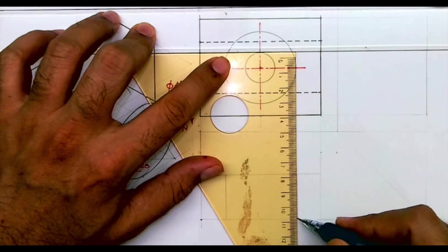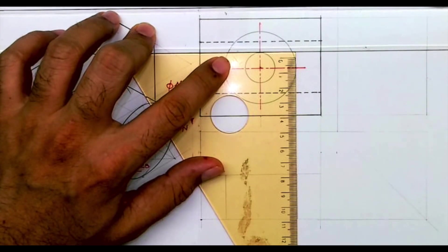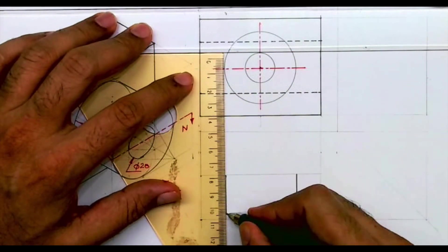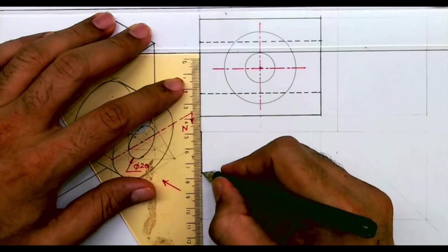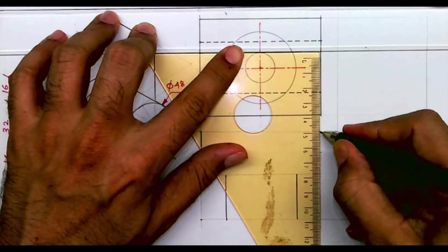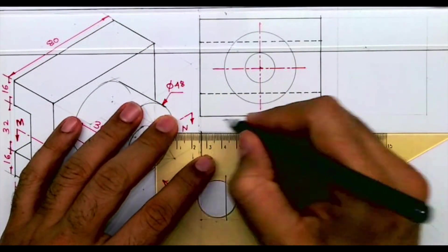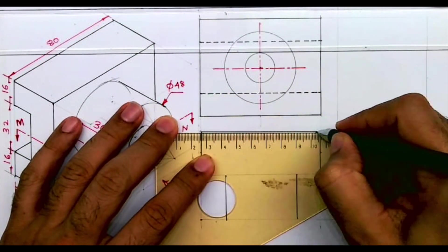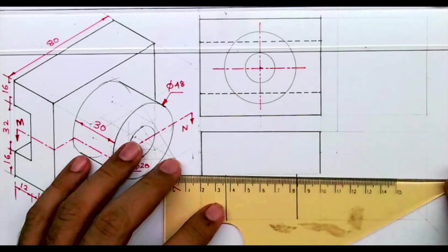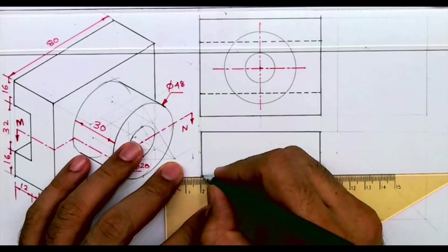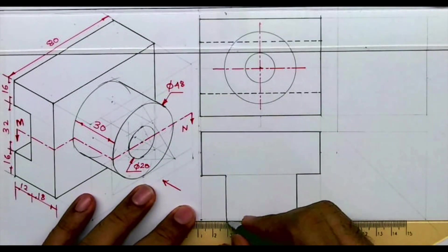We will be drawing it light because we have to draw sectional top view. Only the extreme boundary will be dark and then rest we can do it when we are doing hatching. And if you want to draw you can draw light. So what you can do instead of drawing dotted line you can draw light line.